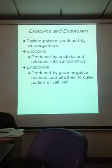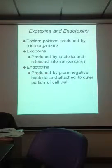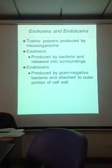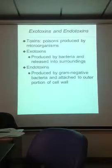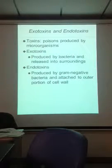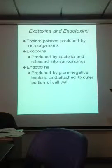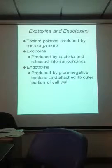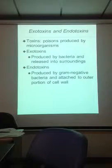Some bacteria produce toxins. There are two types. Endotoxins are produced by gram-negative bacteria and are attached to the outer portion of the cell wall. There is another type called exotoxins — these are produced by the bacteria and then released into the surroundings. So we have two types: exotoxins and endotoxins.